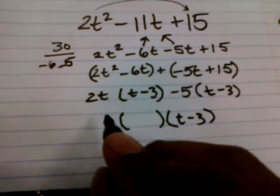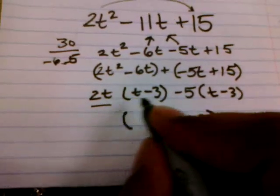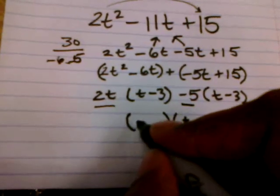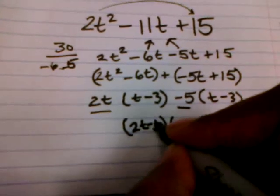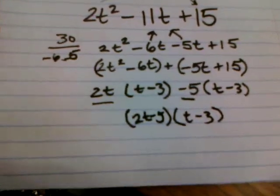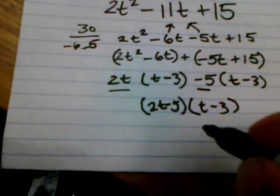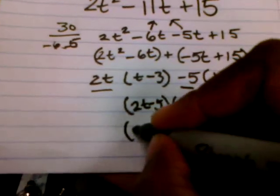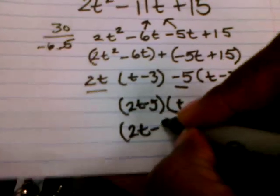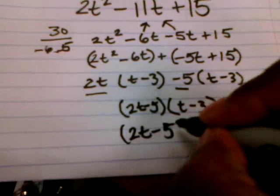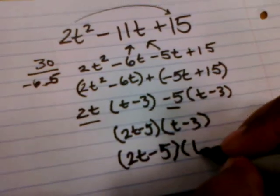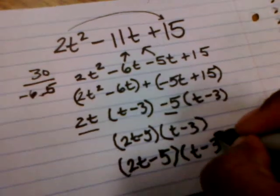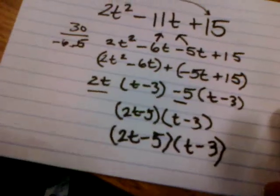And I also know I have 2t and a negative 5 left over. So I will write that out. And now it's been successfully factored. Let's write that out one more time. 2t minus 5 times the quantity of t minus 3. And there you are.